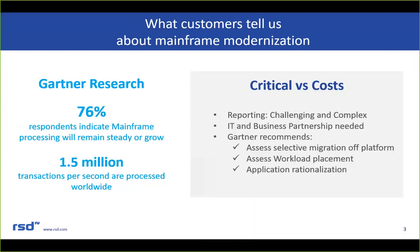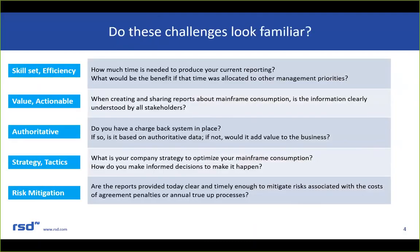Conduct an application rationalization initiative so that you align applications and workload with the business and use these savings to fund digital initiatives. The key question is: how do you make these critical decisions? We propose by knowing and understanding the current consumption and workload in your environment. How much time is needed to produce your current reporting? Is the data you're producing really understood across the business, or is it so specific to IT that they're the only ones who can understand it? Is it actionable? Do you have a chargeback system in place based on authoritative system data?